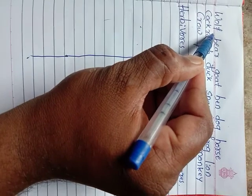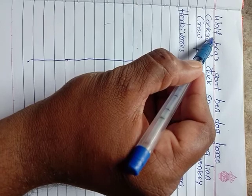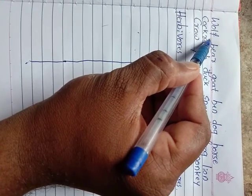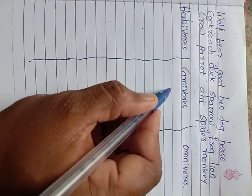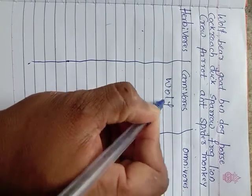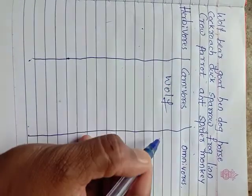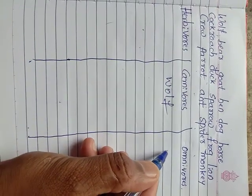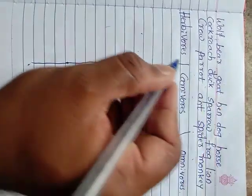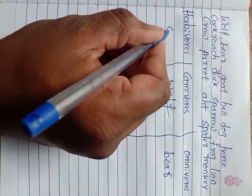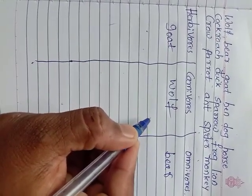Now we have to classify which animals come under herbivorous, which under carnivorous, and which under omnivorous. First, owl — owls eat other animals, so what do you call that? Carnivorous. So owl is carnivorous. Next, bear — bear eats both plants and animals, so bear is omnivorous.